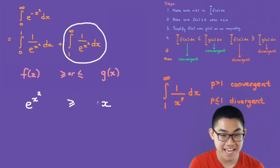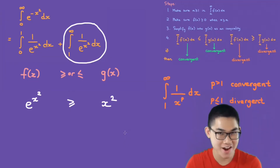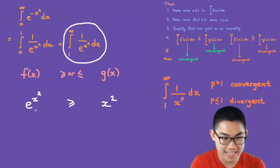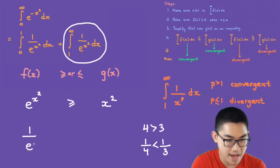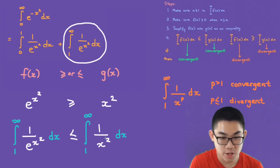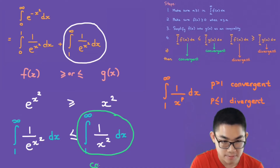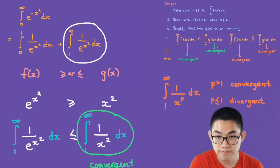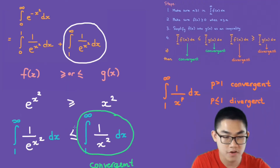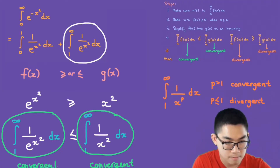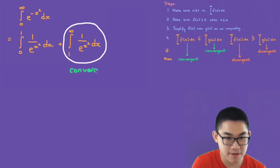This takes trial and error. Instead of saying x, we'll say x to the power of two. Because e to the power of x squared is larger or equal to x squared, this is like saying 4 is larger than 3, meaning one over 4 is smaller than one over 3. So one over e to the power of x squared is smaller or equal to one over x squared. Now redoing step four with x squared, p equals two, which is larger than one, so this integral is convergent. The signs match — f of x is smaller or equal to g of x and g of x is convergent — so f of x is also convergent.